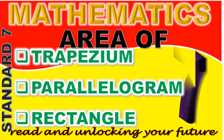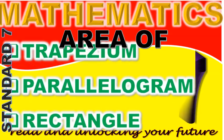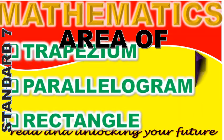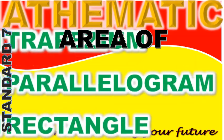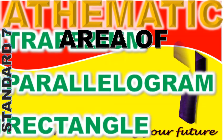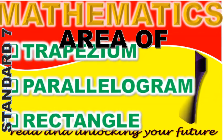Class, using the formula, work out the area of triangle ABD and give the answer to your teacher. Kanene, what is the area of triangle ABD? Area of triangle ABD is 30 square centimeters. Good, Kanene. To work out the area of triangle ABD, we take the base AB which is 10 centimeters, and the height AD which is 6 centimeters, and multiply by a half. That is, a half multiplied by 10 centimeters multiplied by 6 centimeters, which gives us 30 square centimeters.